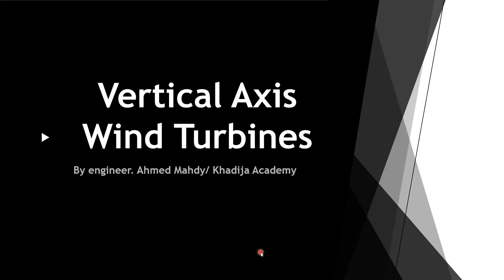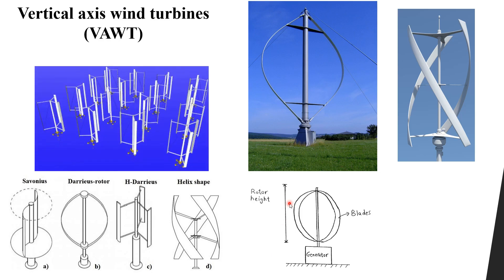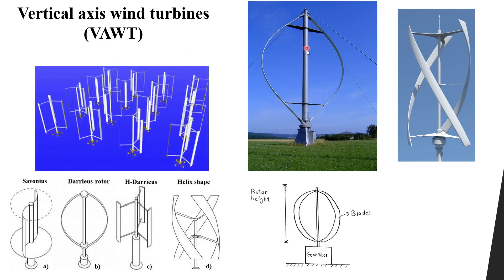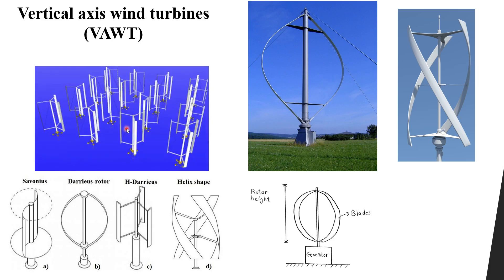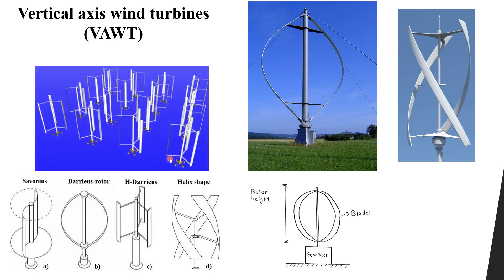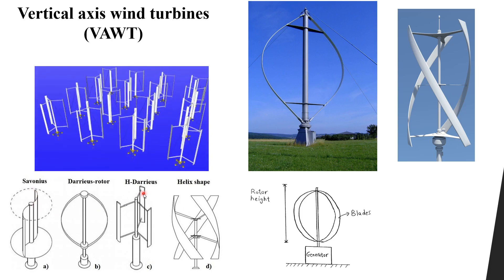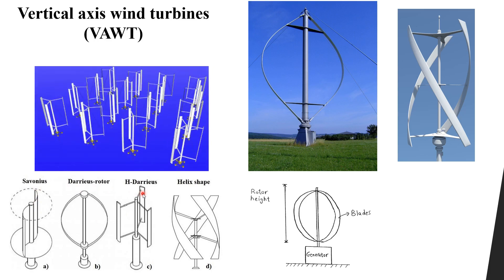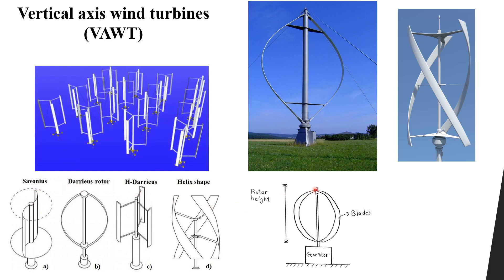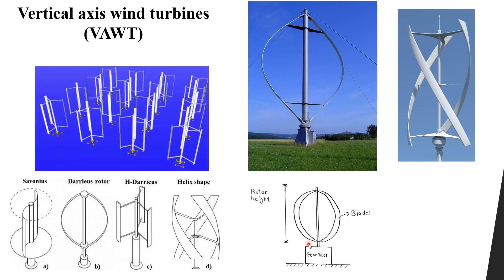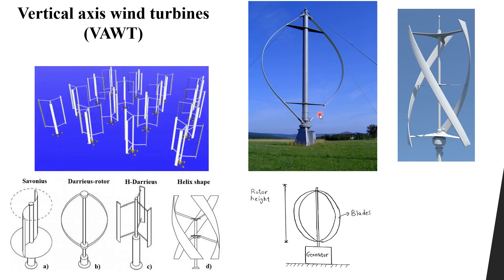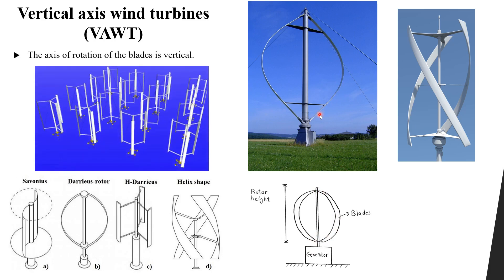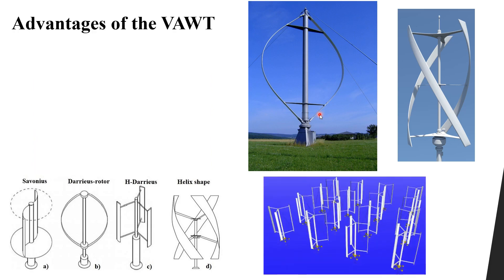Now let's look at the vertical axis wind turbines in more detail. As you can see on the slide, there are different designs of vertical axis wind turbines — each has its own design which generates a certain amount of power. The distance from top to bottom is called the rotor height, and the blade rotates around a vertical axis of rotation.